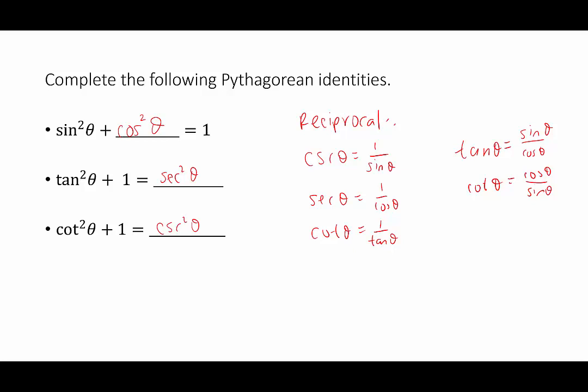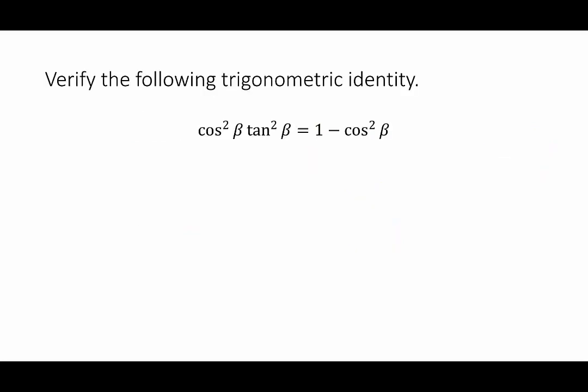One more thing to keep in mind: the exponent notation we saw with the Pythagorean identities means sine of theta quantity squared — we put the exponent there because we're squaring the function itself. Now let's look at our first example: cosine squared beta times tangent squared beta is equal to 1 minus cosine squared beta.